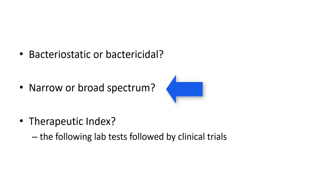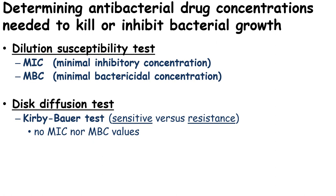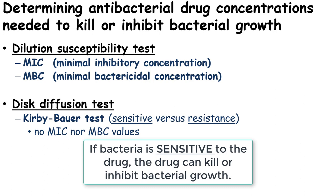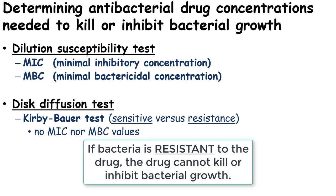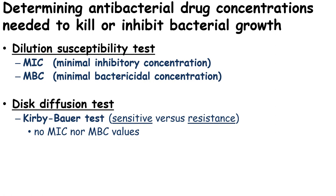To determine narrow versus broad spectrum activity, the disc diffusion test — also known as the Kirby-Bauer test — is used. This test determines whether a bacteria is sensitive or resistant to a given antibacterial drug. If sensitive, the drug will kill or prevent growth and is a good treatment choice. If resistant, the drug has no effect on the bacteria and cannot be used to treat the infection. Note that the Kirby-Bauer test does not provide MIC or MBC values.